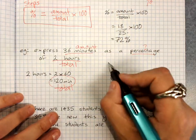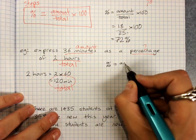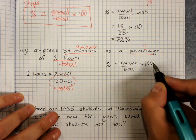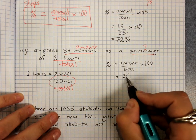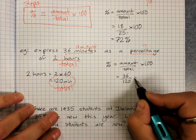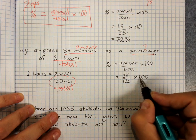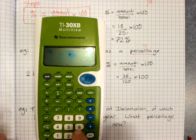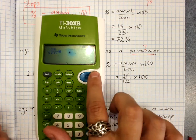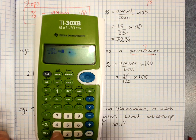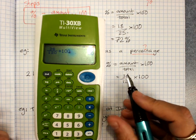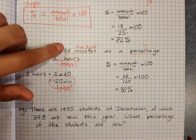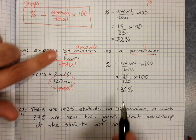And then we solve it the same way. My percentage will equal the amount out of the total times 100. The amount was 36, the total was 120, and I must times by 100. 36 over 120 times 100 equals 30 percent. So I've used 30 percent of my test time and I've got 70 percent left.